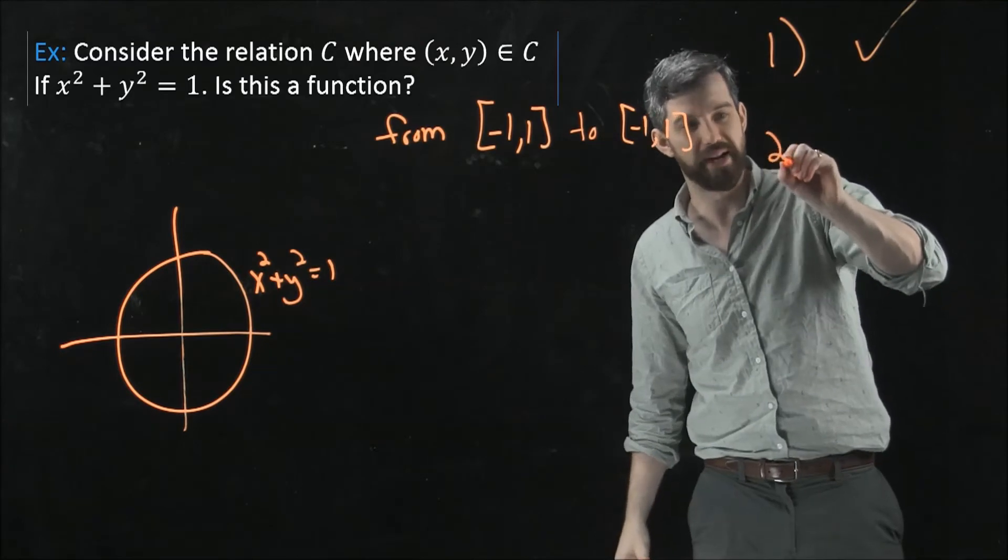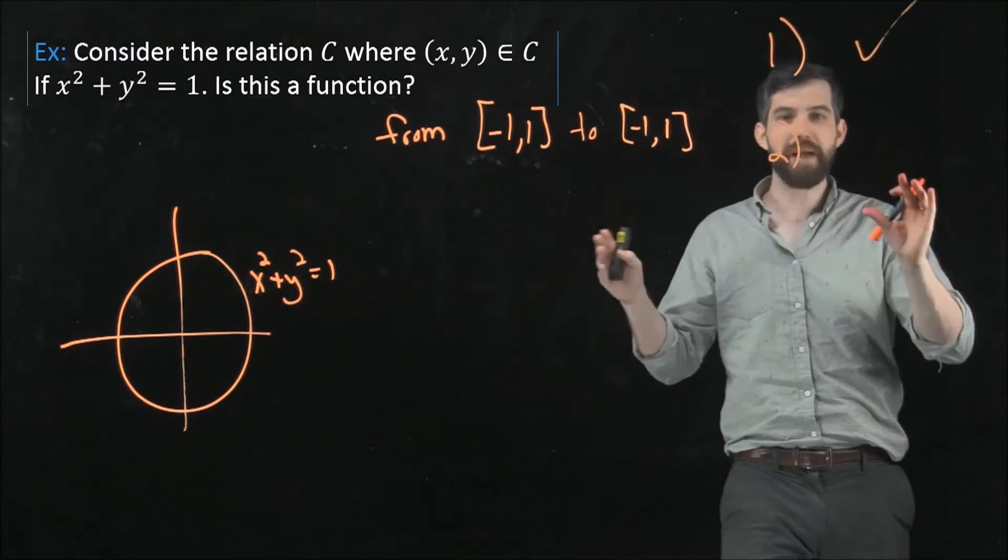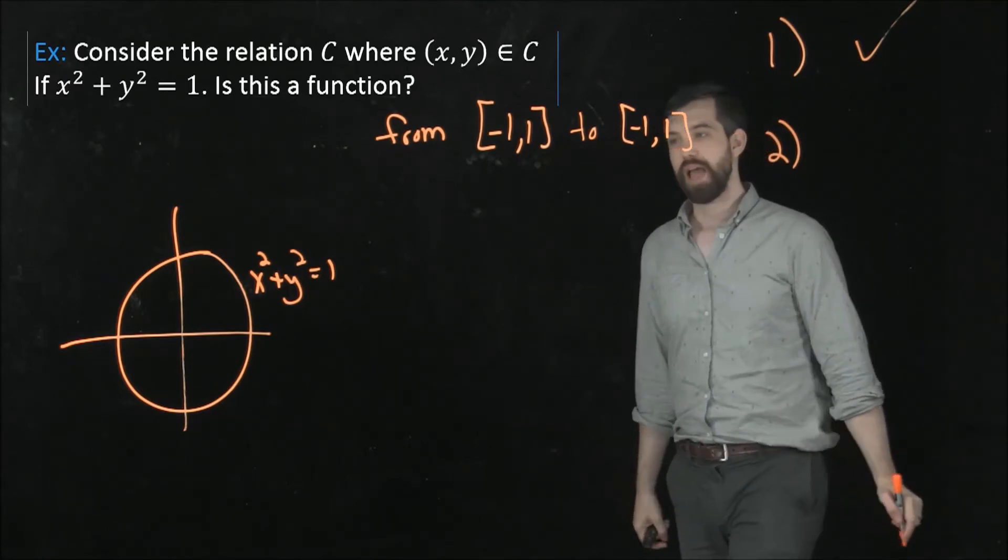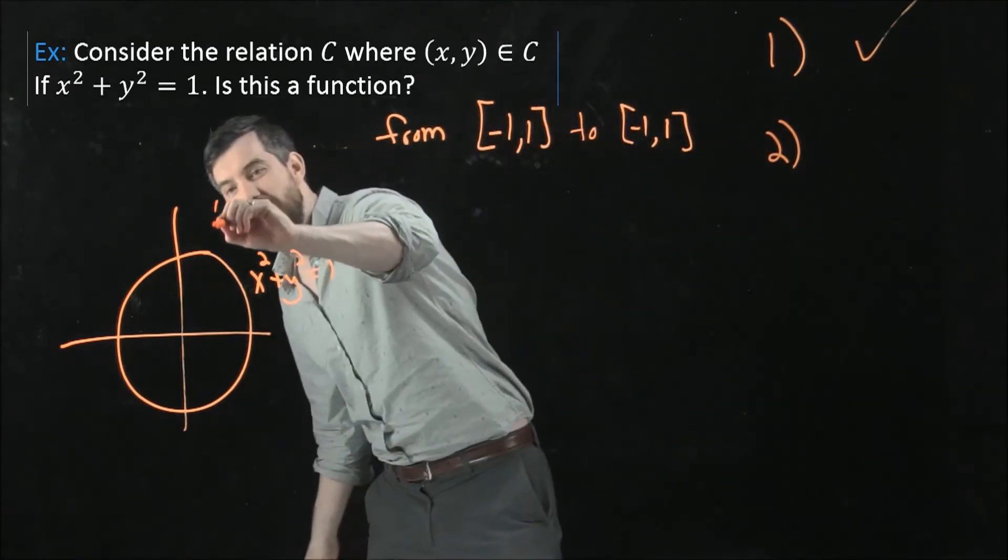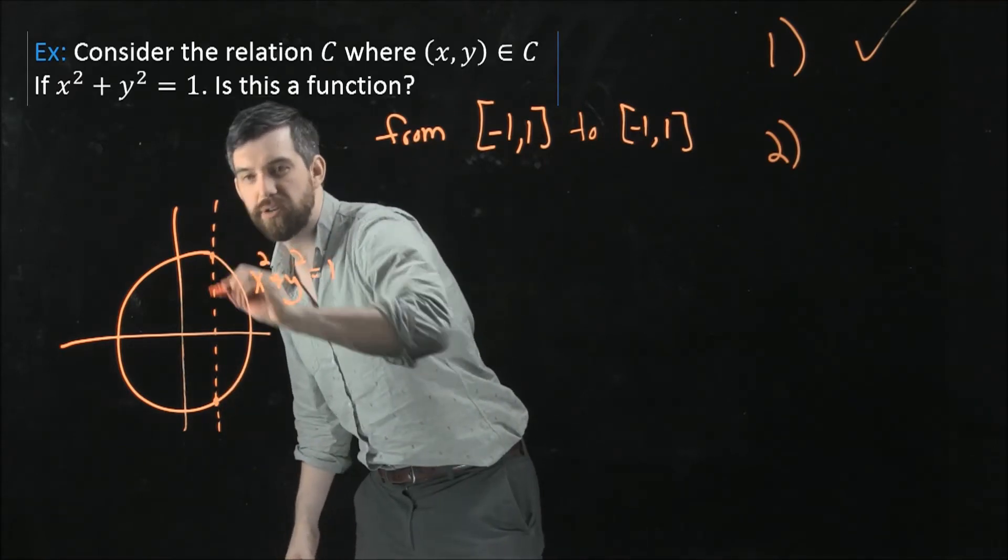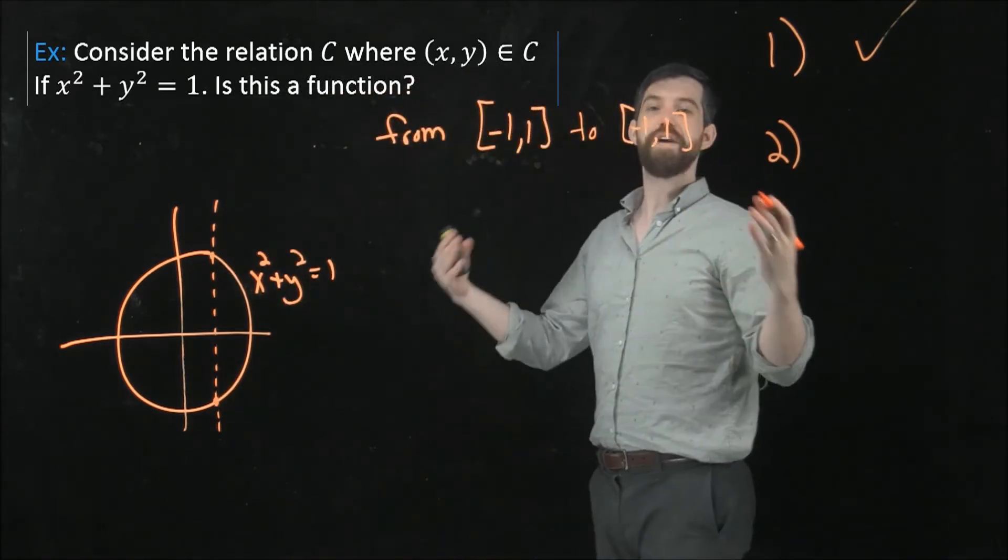But the more interesting point, the point that really matters for a function is the second. It's this vertical line test. And I can note that if I try to draw a vertical line here, that there's two of these different intersection points, and so it fails this condition.